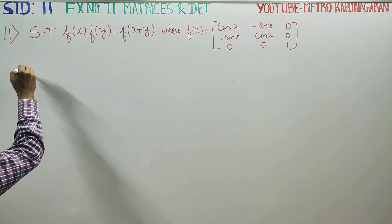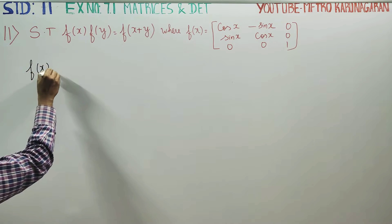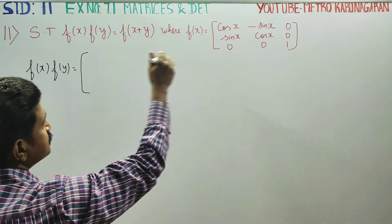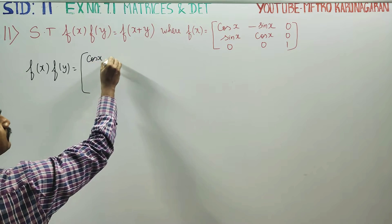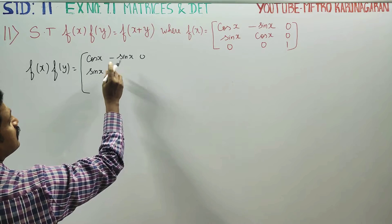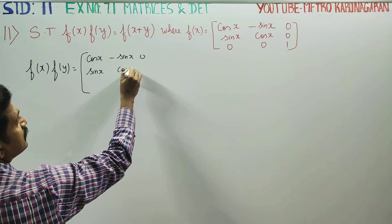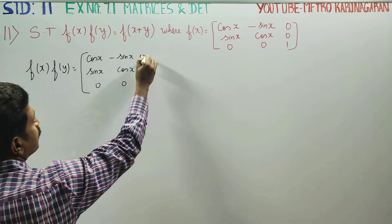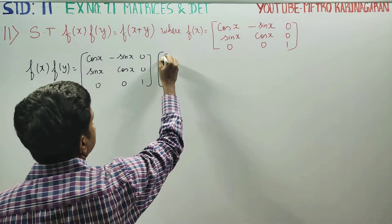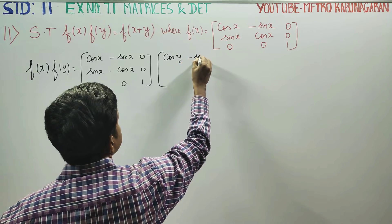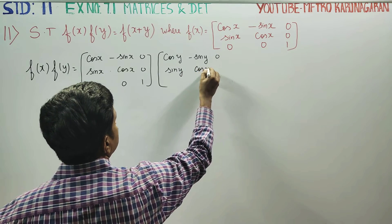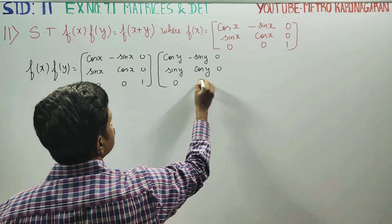First, I am going to multiply f(x) into f(y). f(x) is a matrix with variable x: cos x, minus sin x, 0; sin x, cos x, 0; 0, 0, 1. f(y) is equal to: cos y, minus sin y, 0; sin y, cos y, 0; 0, 0, 1.